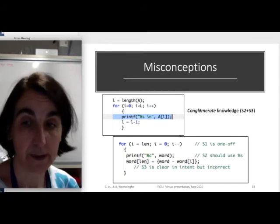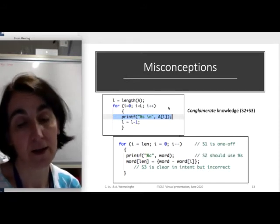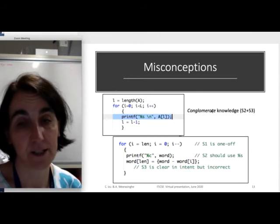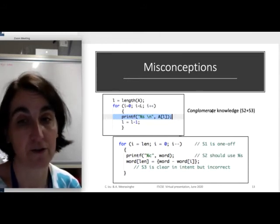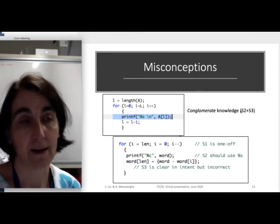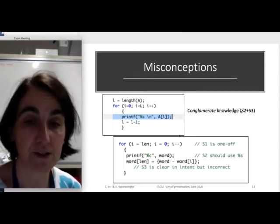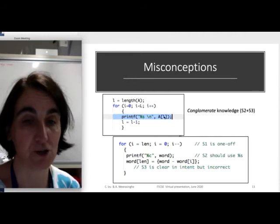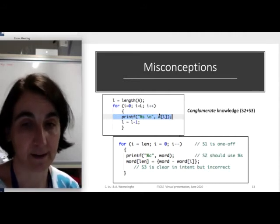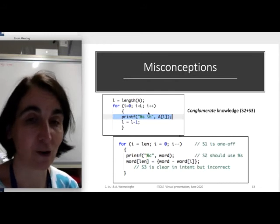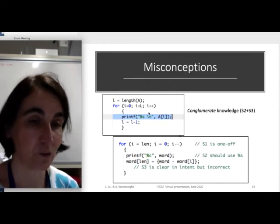We also found a small number, about a dozen of students that exhibit what Perkins called conglomerate knowledge. So they are trying to implement steps two and three at the same time by telling the computer to print the string and stop at the letter indicated by i. Obviously this is incorrect and we need to break that into two commands.